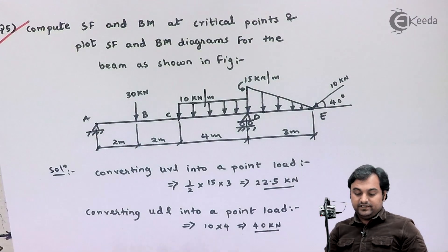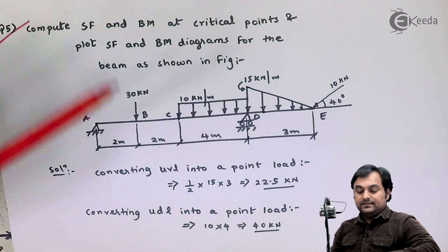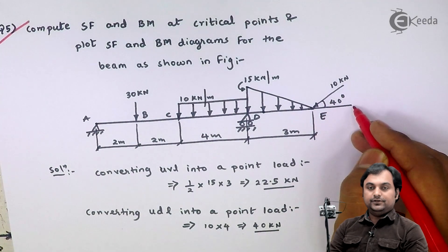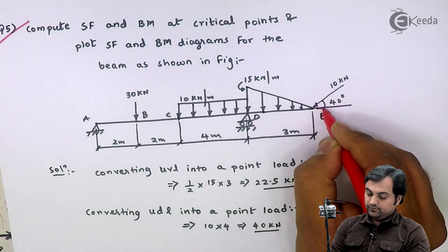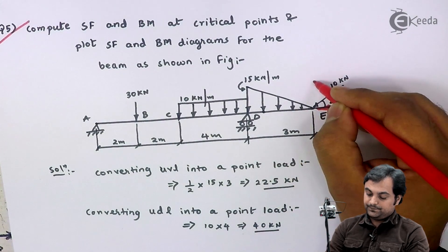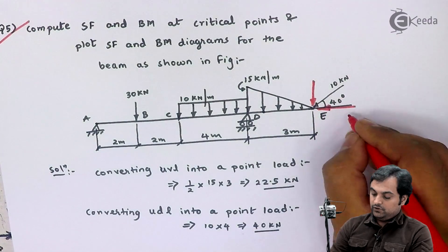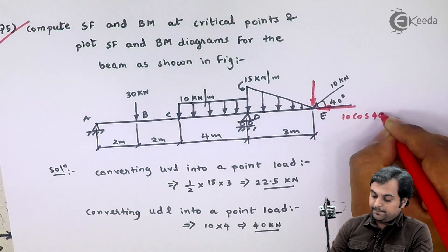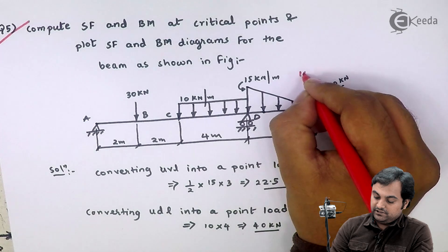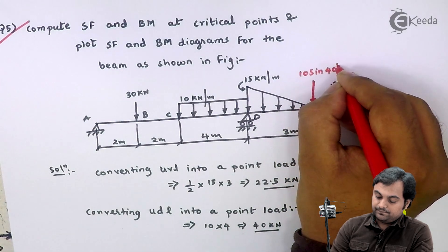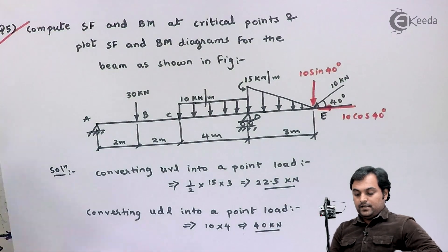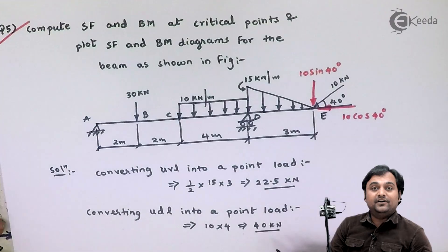After getting UVL and UDL, the next thing left in this beam is that we have a 10 kilonewton load which is inclined at 40 degrees to the horizontal. So we would have two components: one will be horizontal — 10 cos 40 degrees — and the other will be vertical — 10 sin 40 degrees. Now I have this beam in a more simplified way.